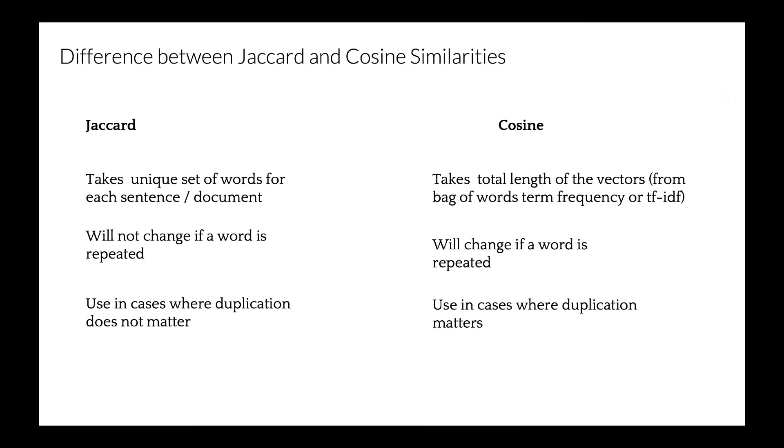Let's review some differences between Jaccard and cosine similarities. So, Jaccard method takes only a unique set of words for each sentence or document, while cosine similarity takes total length of the vectors. So, we can say these vectors could be made from bag of words, term frequency, or TF-IDF.